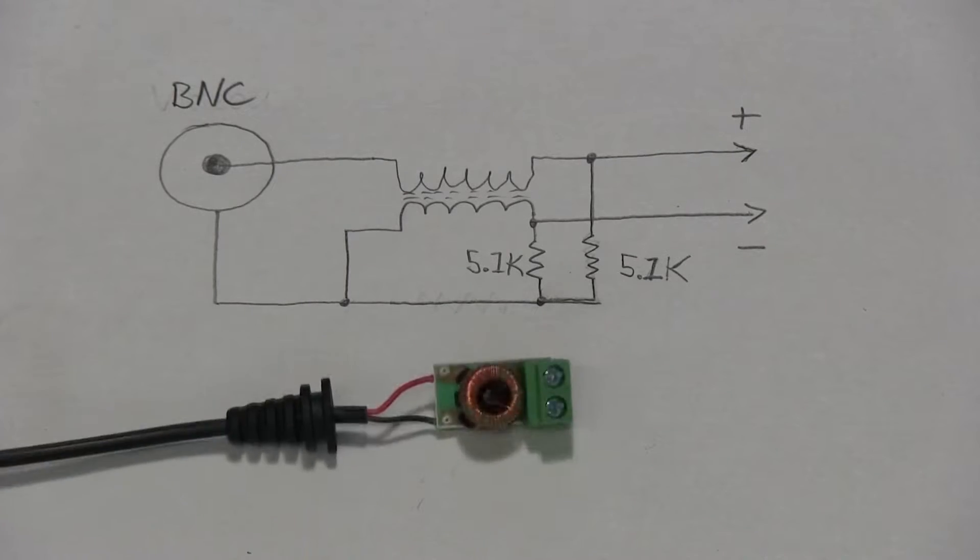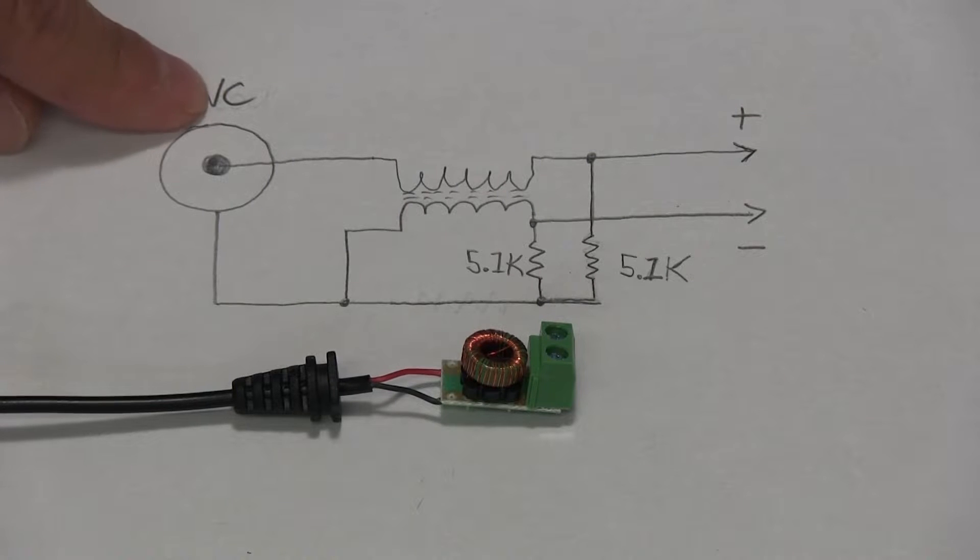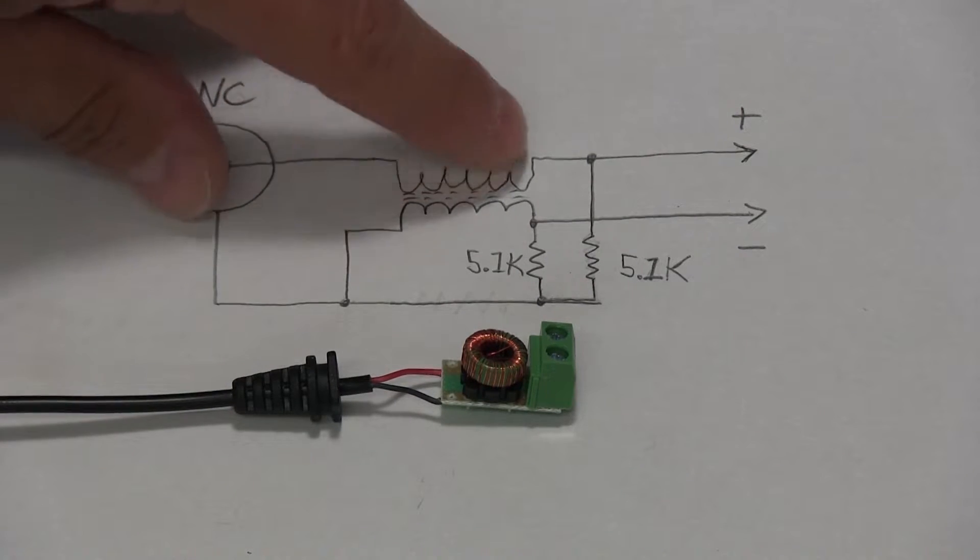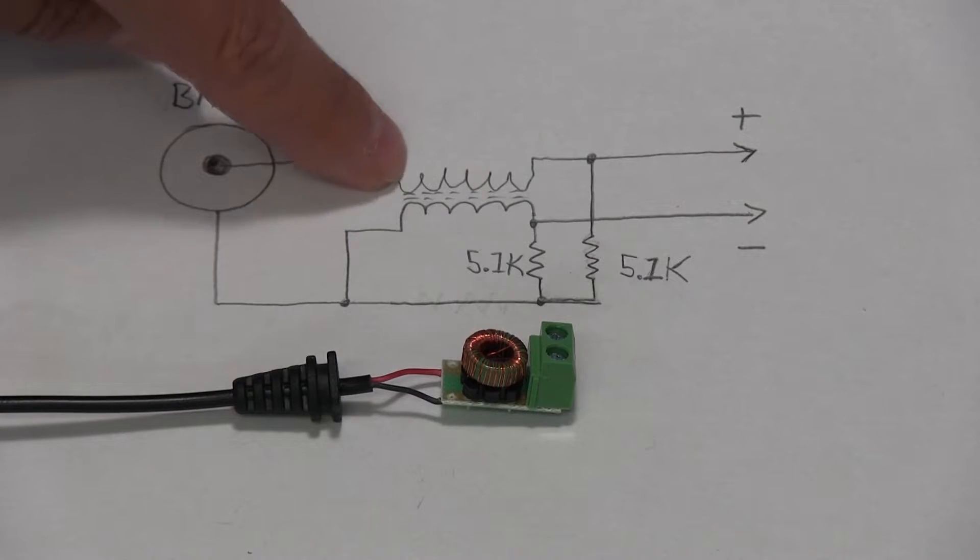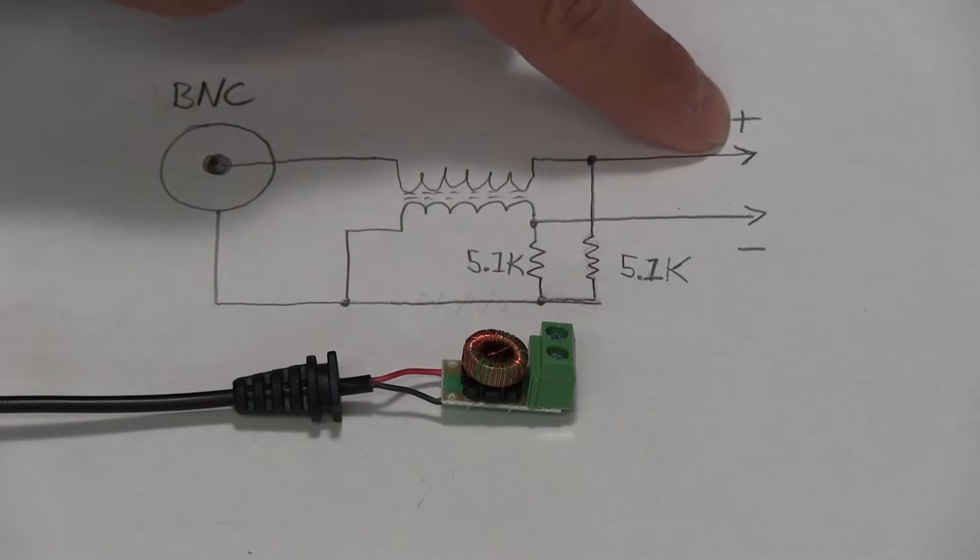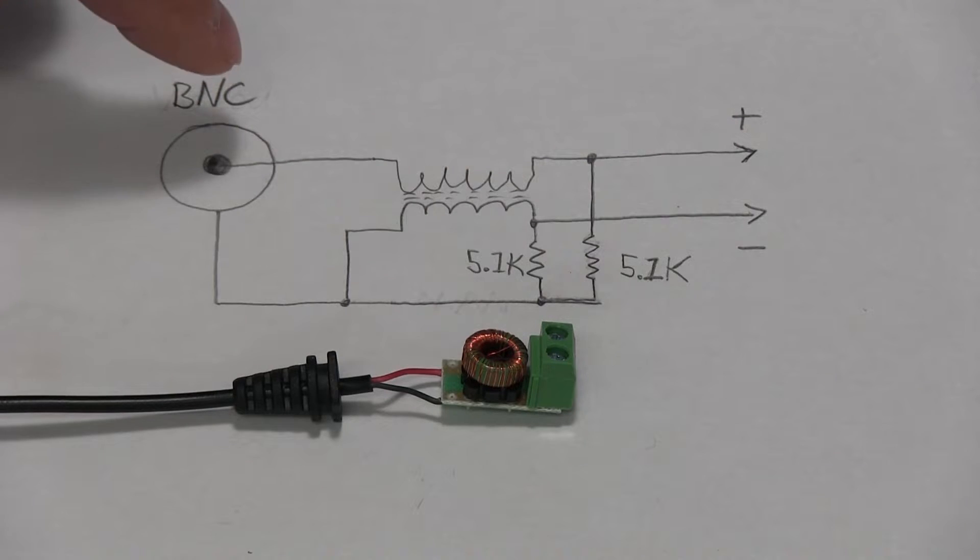So we have our BNC, we have the center pin of that coming into here and it goes straight into this little toroid. It's only one wire going straight in there, and on the opposite side it comes out and it goes to the positive side of the connector.